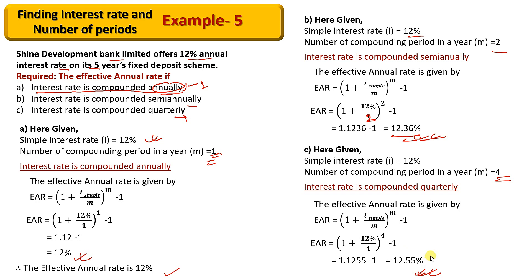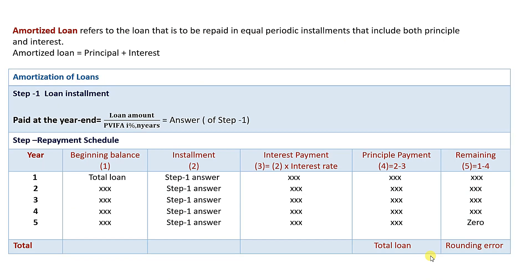The most important topic is the amortization schedule. An amortized loan is to be paid in equal periodic installments that include both principal and interest. With an amortized loan, you need to pay the interest as well as the principal.